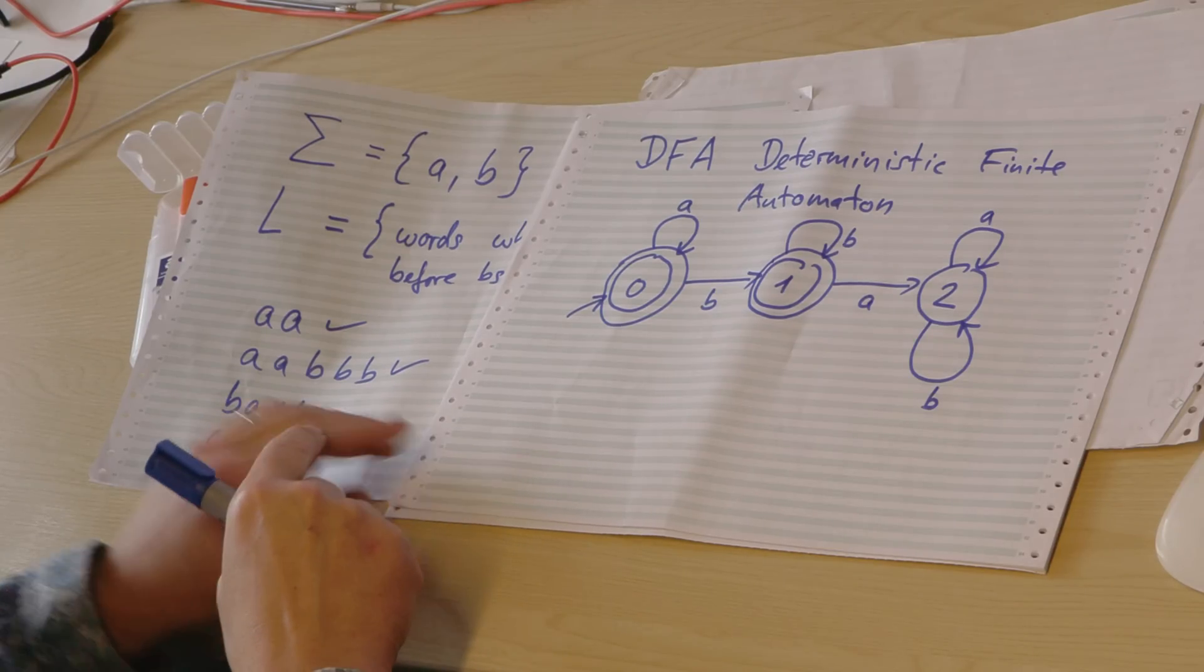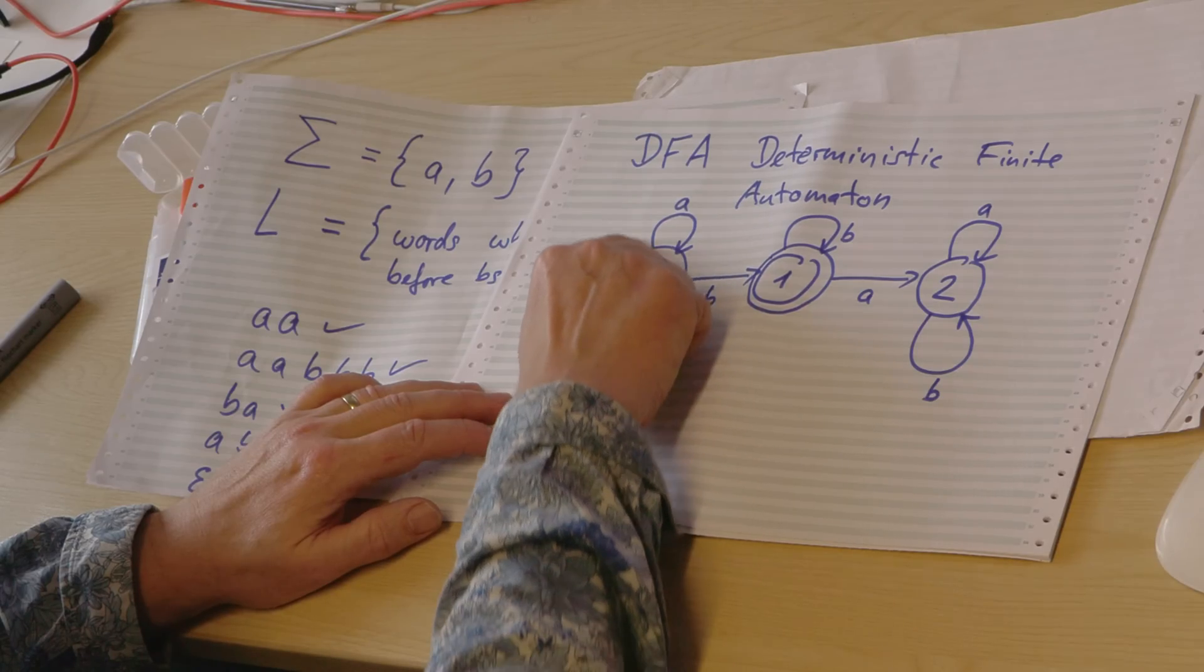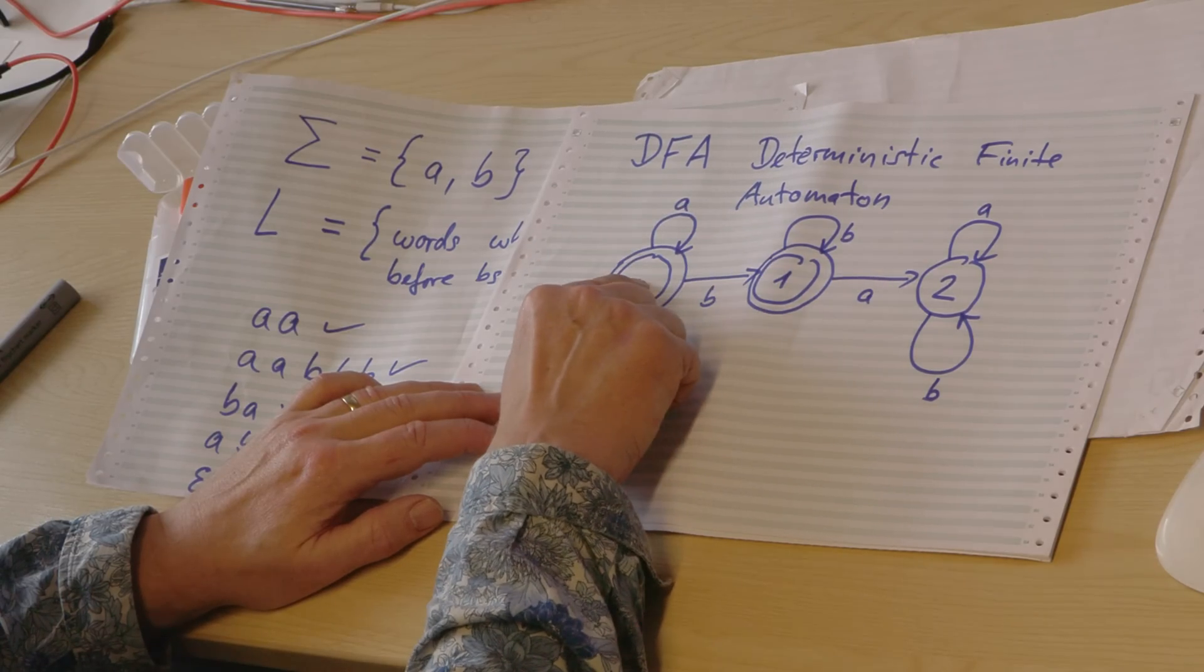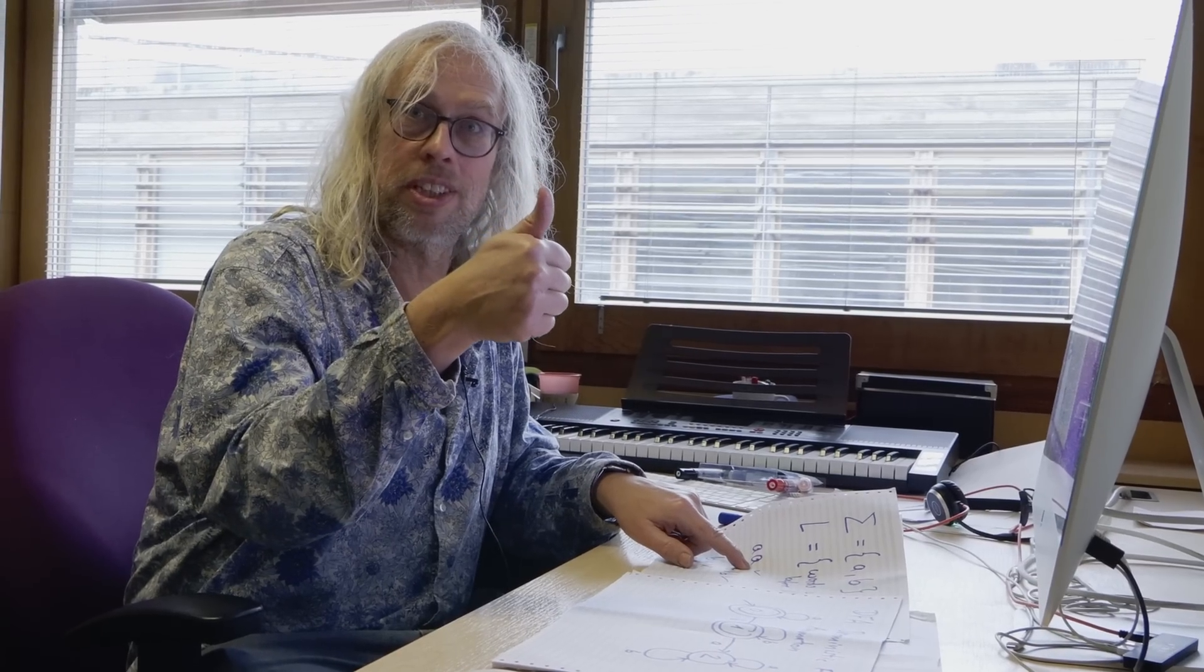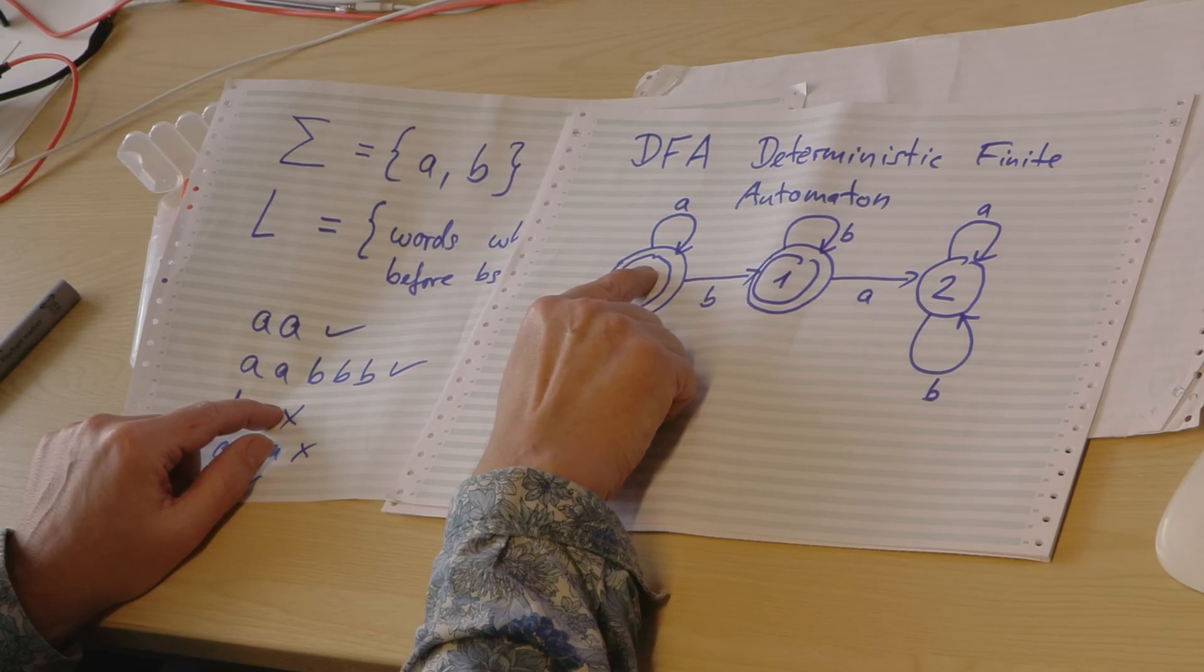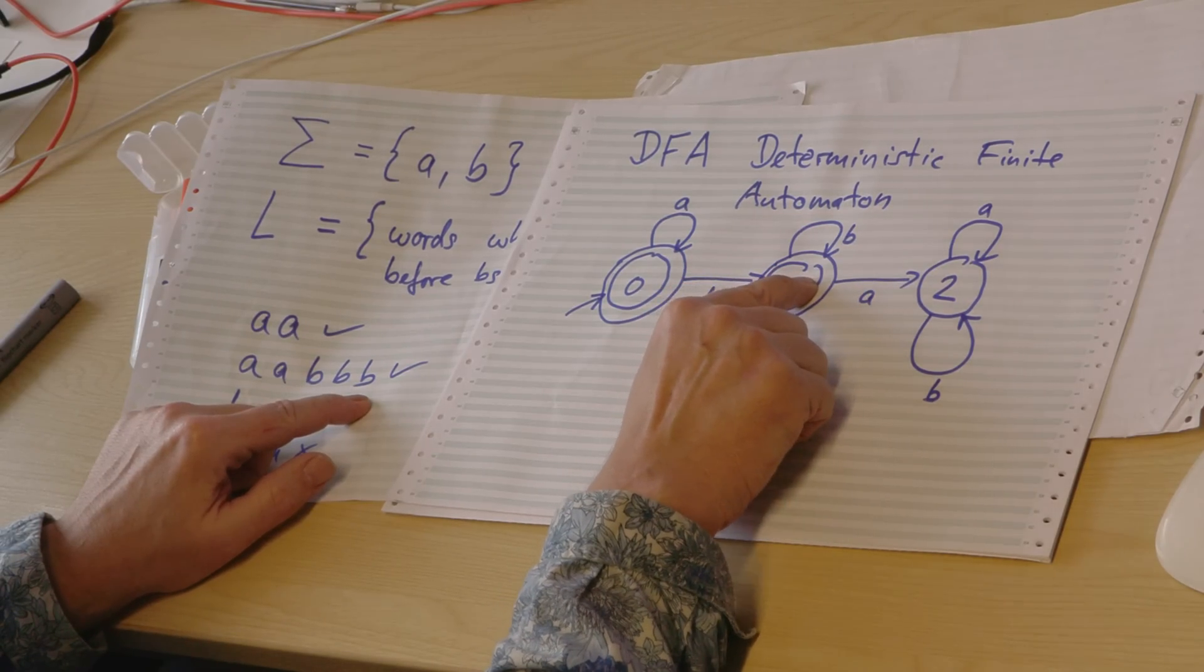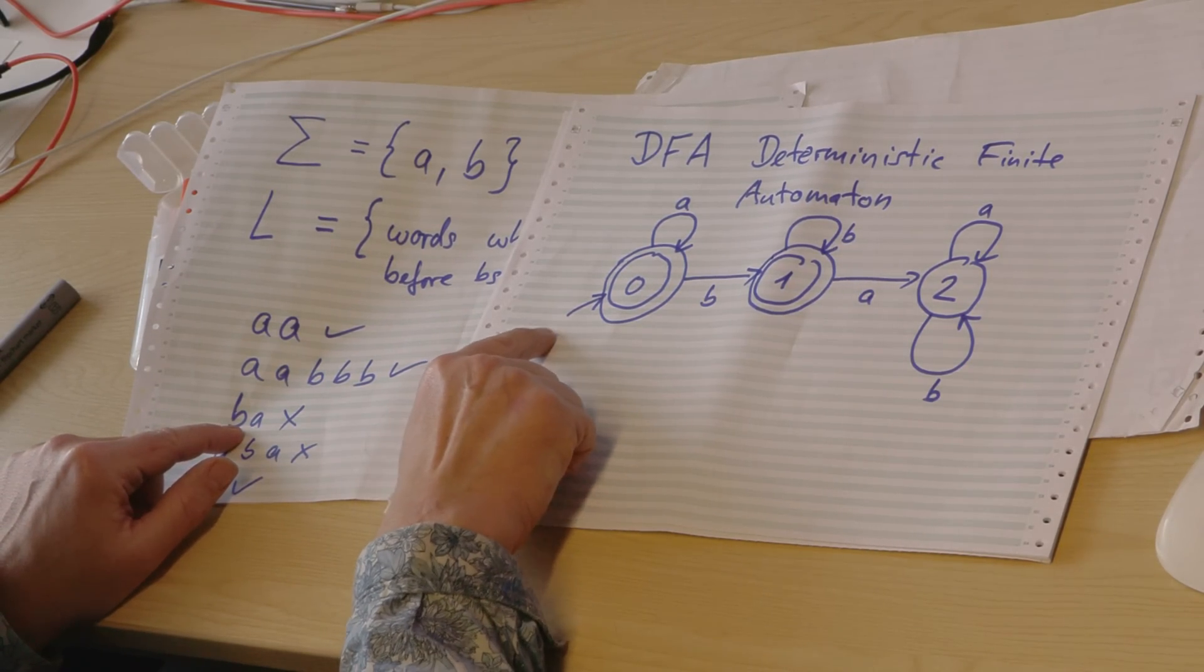Now let's look at the examples we had. So how does this work? a a - we start here, I see an a, I stay here, I continue, I go back here. a - and now I'm finished. I read my a and I'm in a final state. The automaton says yes. Now a a b b - a, a, now I have a b, another b, another b, another b. I'm in a final state, I'm happy.